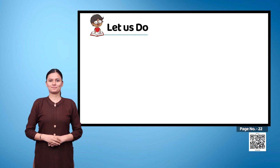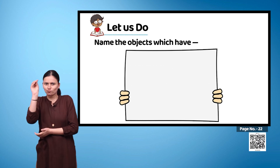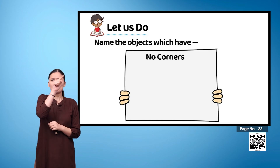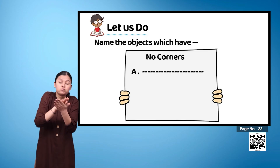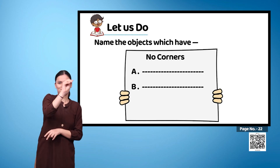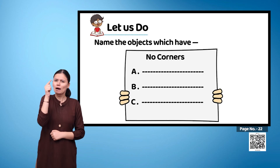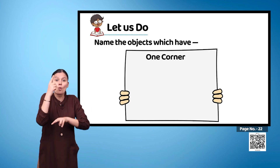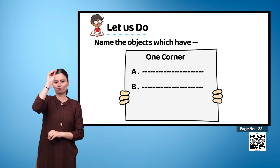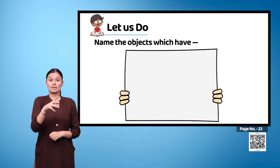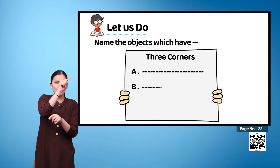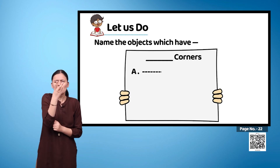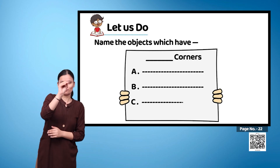Let us do: Name the objects which have no corners (a, b, c), one corner (a, b, c), and multiple corners (a, b, c). Fill in the blanks for each category.